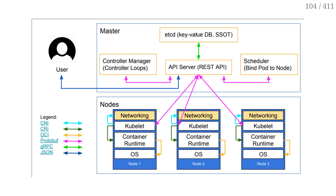etcd is the database where Kubernetes stores all the critical information: what nodes we have, what applications should be running — all the really important data is stored there. It's the SSOT — single source of truth — used as a reference to rebuild everything else. We could lose the controller manager, the scheduler, and the API server, and that's fine. As long as we have etcd, we can get back on our feet again.